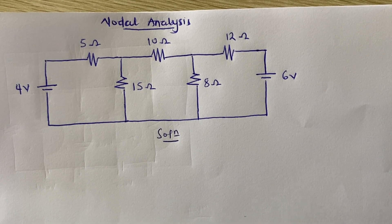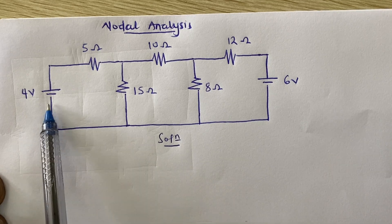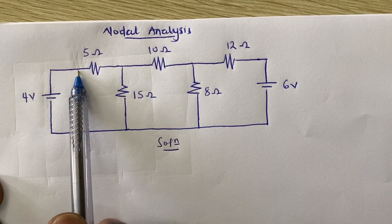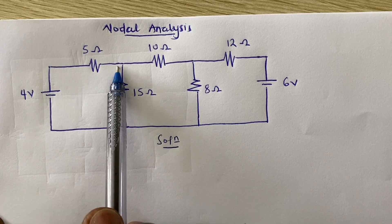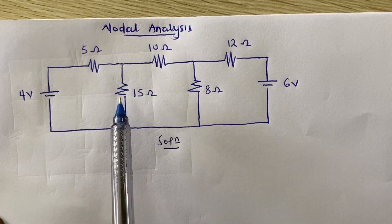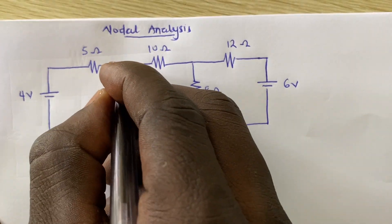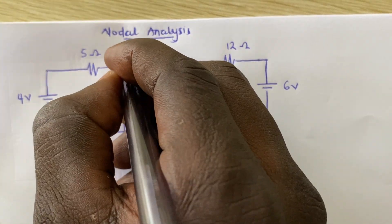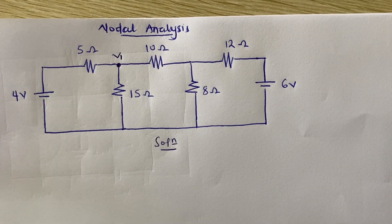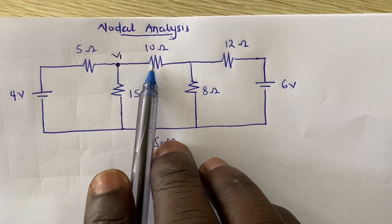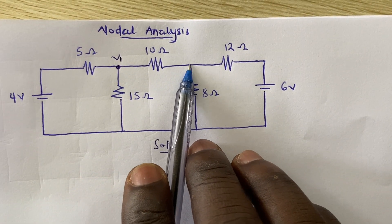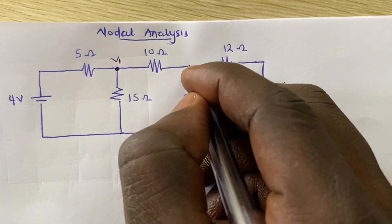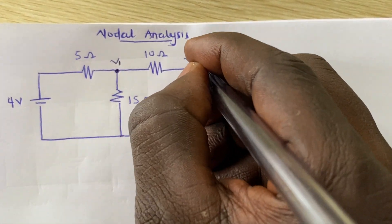Whenever you get a junction where current is going to split, then you have a node. From here, when this four-volt source produces a current flowing through the five-ohm resistor, when it gets to this junction some goes one way and some goes another — so this is a node. We can assign our first nodal voltage V1 to it. Similarly, when current splits at the next junction, that is also a node and we assign V2 to it.